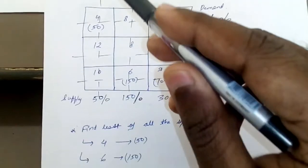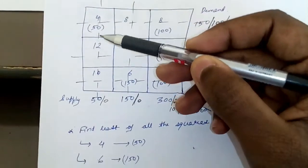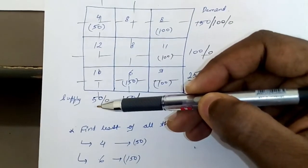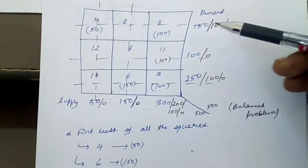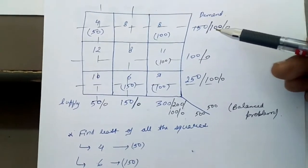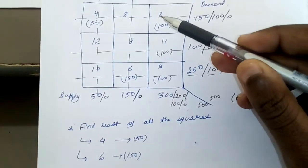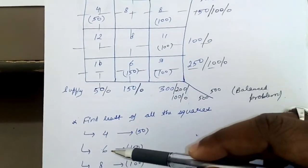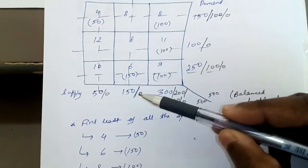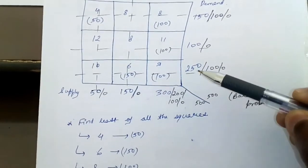Now again you check the remaining blocks: 8, 8, 8, 11, 6 and 9. So the least is 6. Here supply is 150, demand is 250, so maximum 150 can be supplied. You write 150 here, you put 0 here, you cross this column and here now demand remains 100 since 150 has been fulfilled.